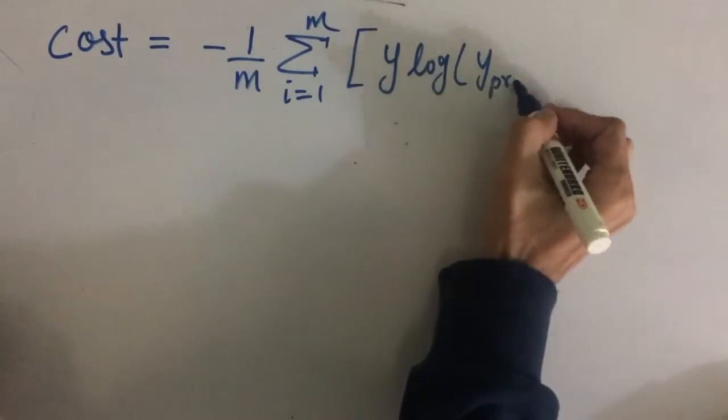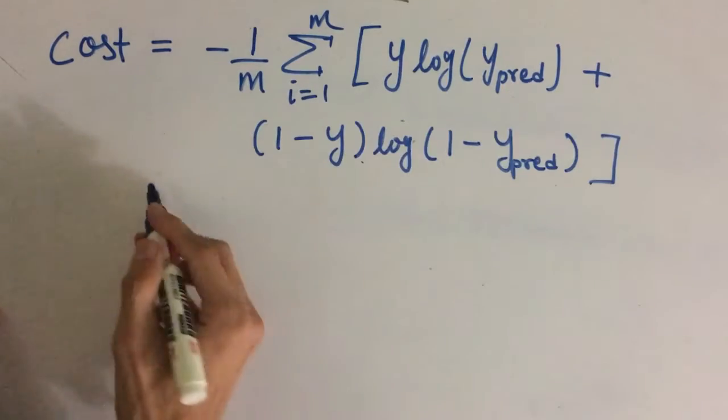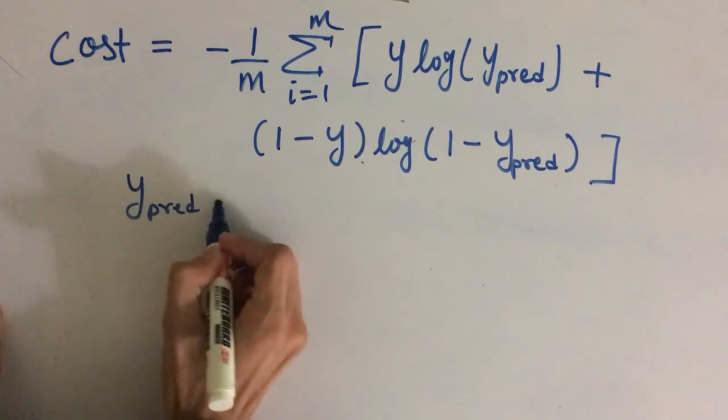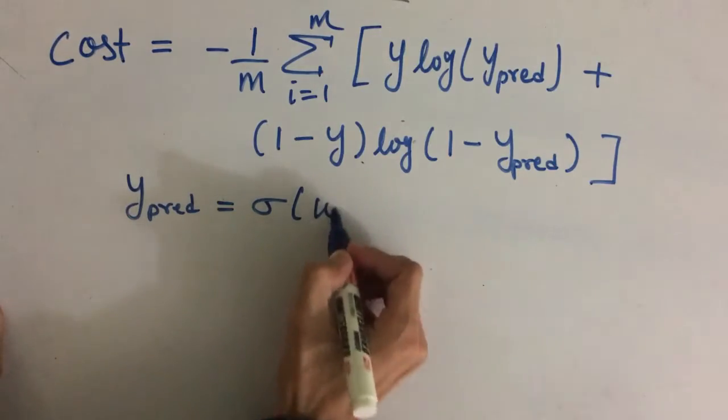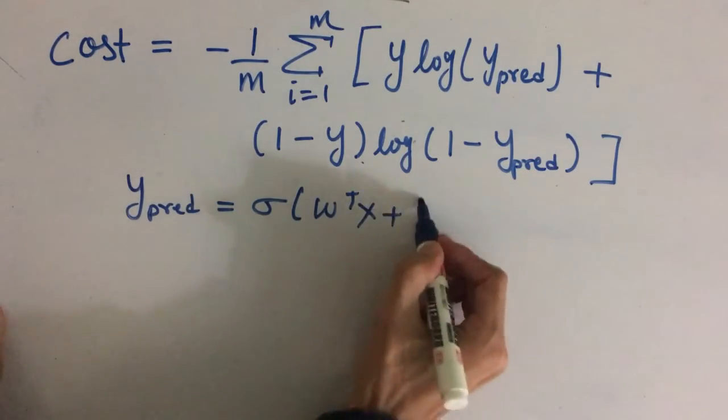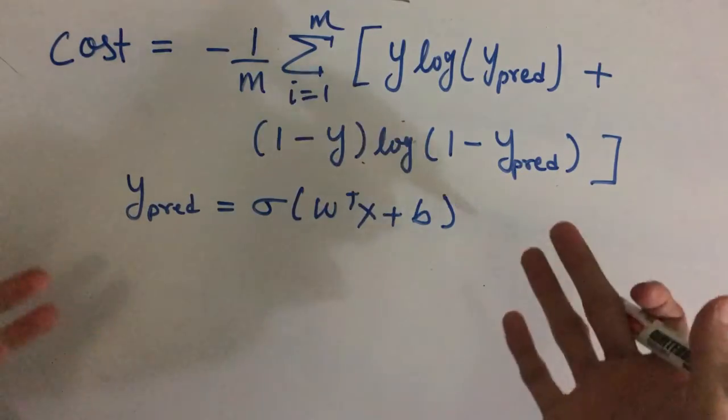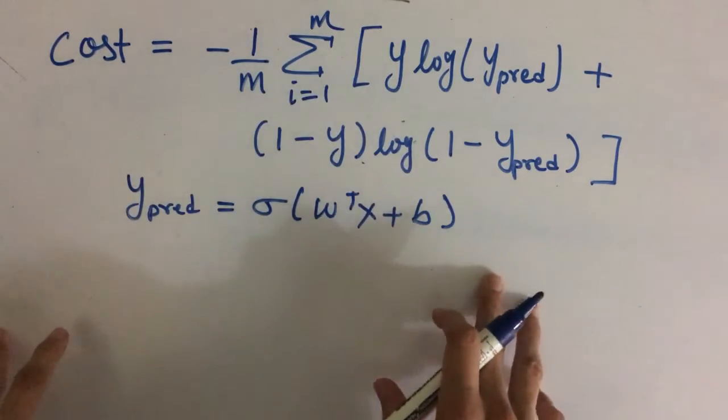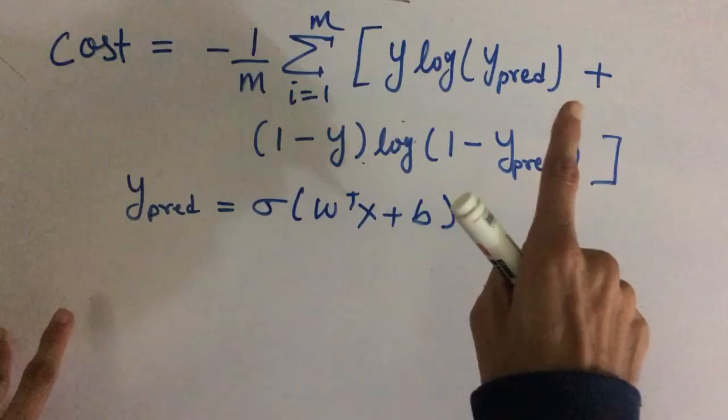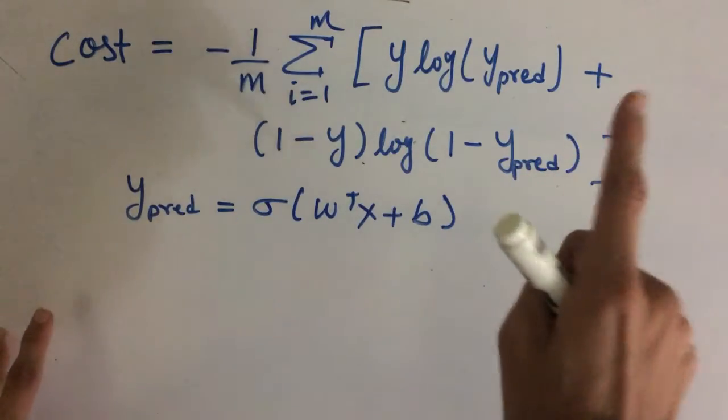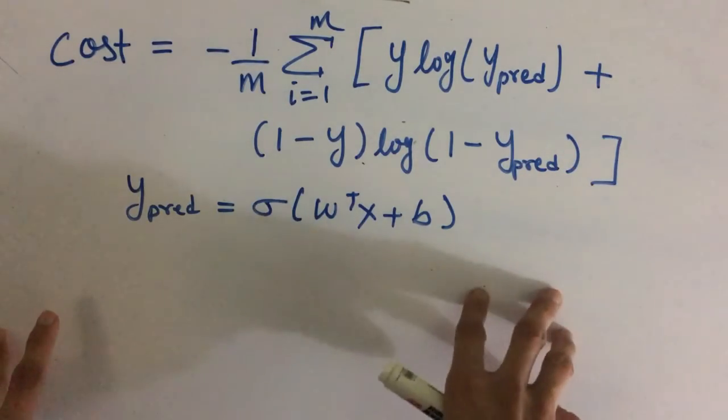That's why we use a different formula for the cost function, and that formula is given by cost equals 1/m sum from i=1 to m of y log(ypred) plus (1-y) log(1-ypred), and our ypred here is given by sigmoid of w transpose x plus b. Now if you do not know how this came or if you want to know more about logistic regression, then click on the i button here which will take you to another video where I have explained logistic regression well.